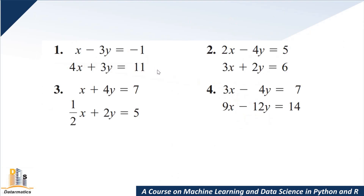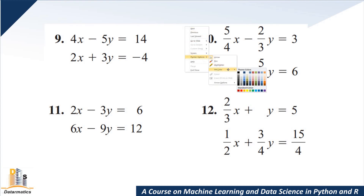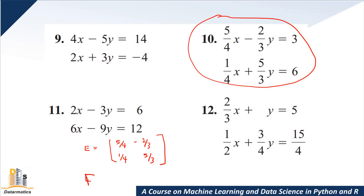Let's now go to something that looks a bit tough — one that has a fraction, like number 10. So let's try number 10. I'm going to use E and F as variable names since we've used A, B, C, D already. E is equal to: we have 5 over 4, minus 2 over 3, 1 over 4, and 5 over 3. And F — let's call it F — is equal to 3 and 6.